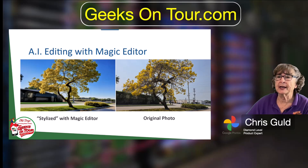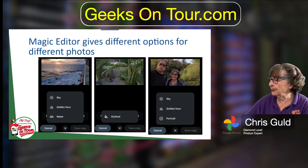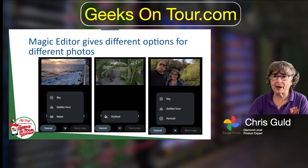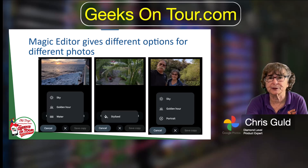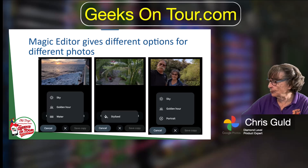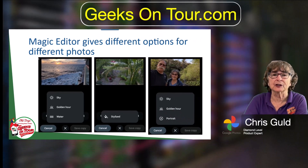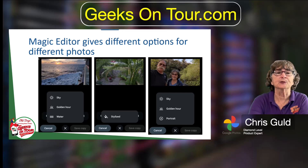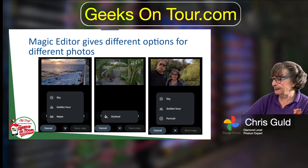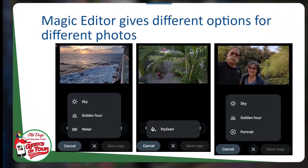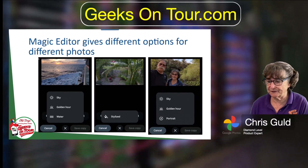What if you open up a picture, tap on Magic Editor, and you don't get the Stylized option? This is AI — it's looking at the picture and saying, what might I do with that picture? The first one: it might make the sky better, or make it look like a sunset, golden hour, or make the water look better. In the second picture, there is no sky, so it only offers Stylized. In the third picture, it doesn't offer Stylized, but it does offer Portrait — because there are people's faces in it.